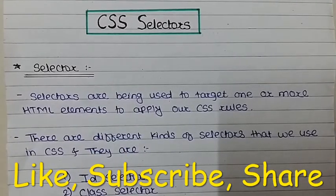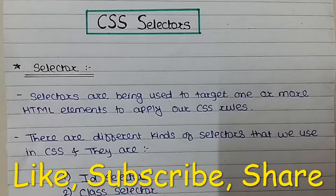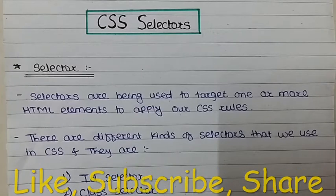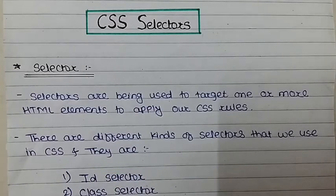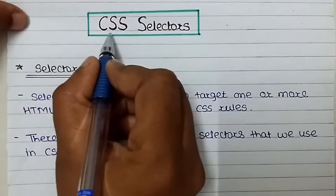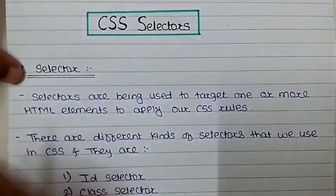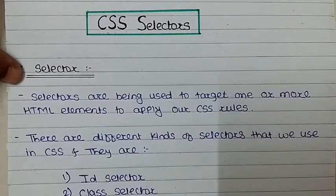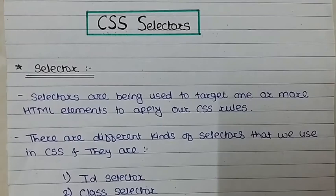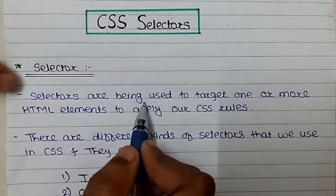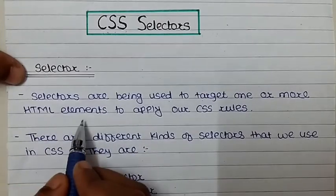Hello students. In earlier videos we learned about types of style sheets. Now in this lecture we will start a new topic: CSS selectors. What is meant by CSS selectors? What are the types of CSS selectors? We will learn the types of selectors one by one. Selectors are used to target one or more HTML elements to apply our CSS rules.